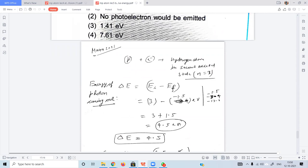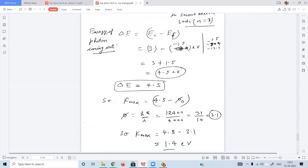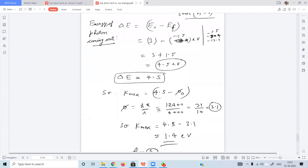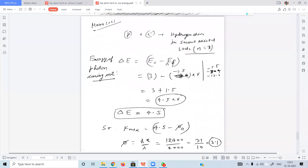Energy came out in the form of photon energy, 4.5 eV. Maximum kinetic energy coming out - the photon energy minus the work function. Work function is phi equals 3.1. Simple calculation: 4.5 minus 3.1 equals 1.4 electron volts.